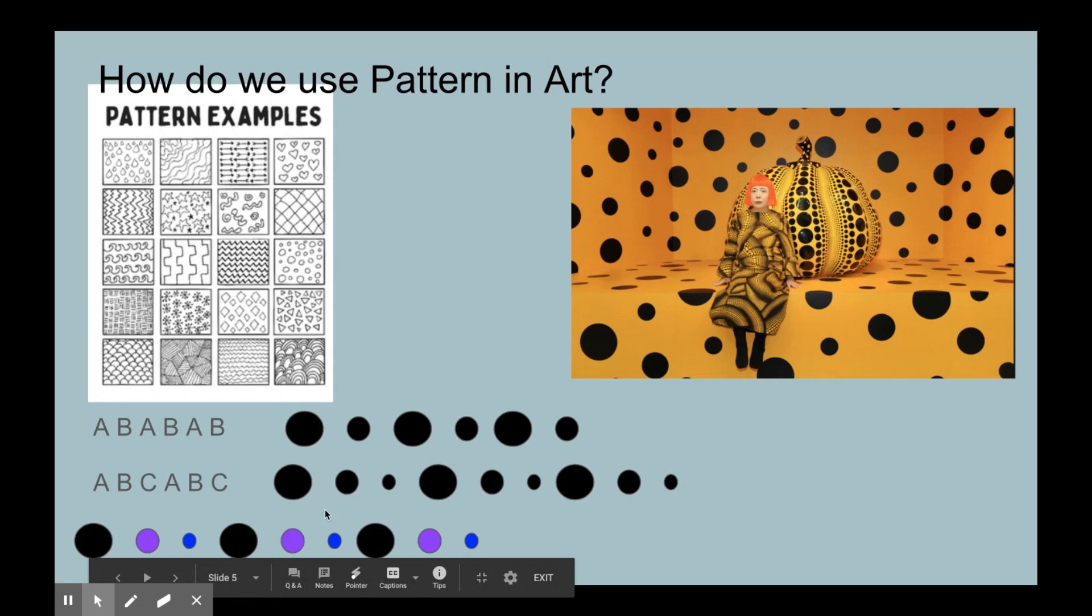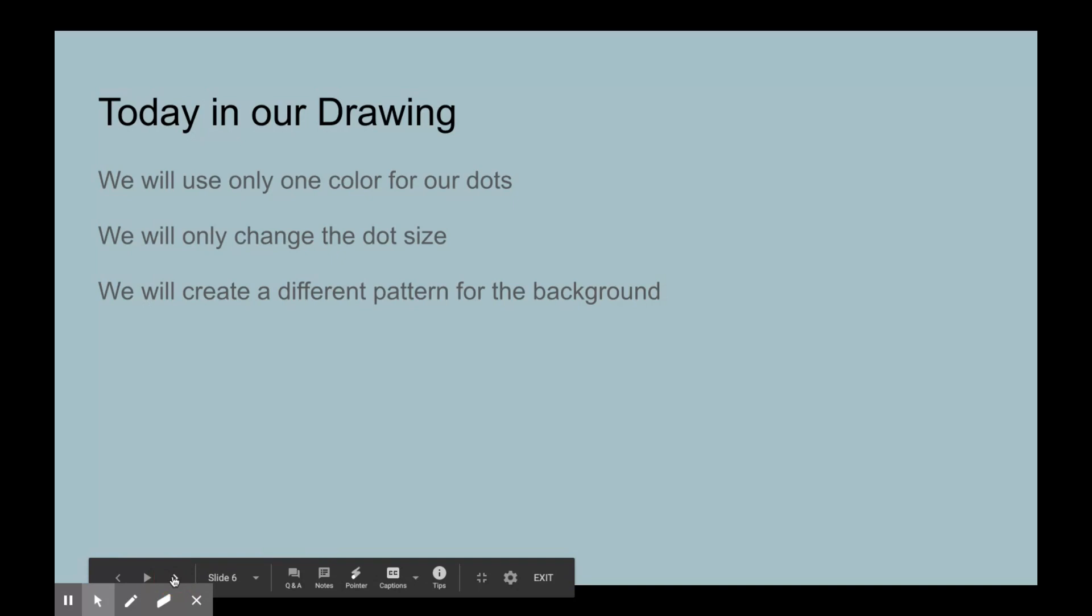An ABC pattern means you're going to have a third addition. So we have the big dot, the medium dot, and now a little dot. That would be A, B, C, A, B, C. Down here at the bottom, it's the same pattern with three colors: black, purple, and blue. It's still an ABC pattern. In your work today, you can create as many patterns as you would like. The only rule is that you have to use the same color. We're not going to use three colors, and I'll go over that more in a few minutes.